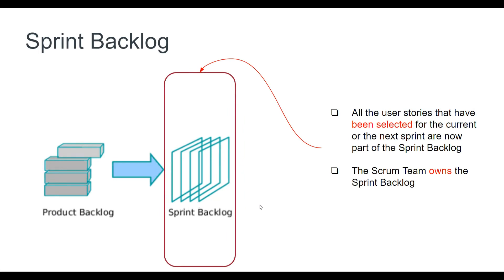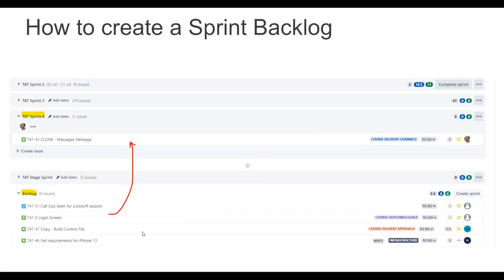The sprint backlog is a subset of the product backlog. Once you select the stories the team wants to work on, they go into the sprint and that becomes the sprint backlog. The sprint backlog is the responsibility of the scrum team — the team takes only those stories it believes it can finish within the two-week sprint period. The scrum team owns the sprint backlog, and you can populate it by selecting the top stories and dragging and dropping them in. Once that's clear, you can start the sprint.